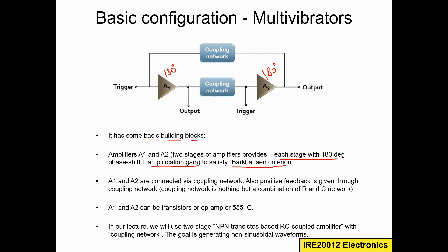The two stages A1 and A2 are connected via coupling networks. One coupling network connects A1 and A2, and another coupling network forms the feedback path — taking a fraction of the output and feeding it back to the input. The coupling network is simply a combination of R and C components — resistors and capacitors.